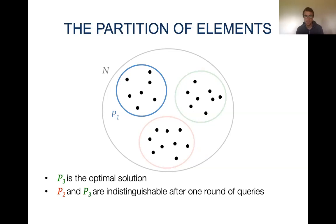We also want that parts P2 and P3 are indistinguishable to the algorithm after one round of queries — that is, after one round, the algorithm cannot tell if an element is in P2 or P3. These two properties together imply that it is impossible to minimize this submodular function after one round of queries.